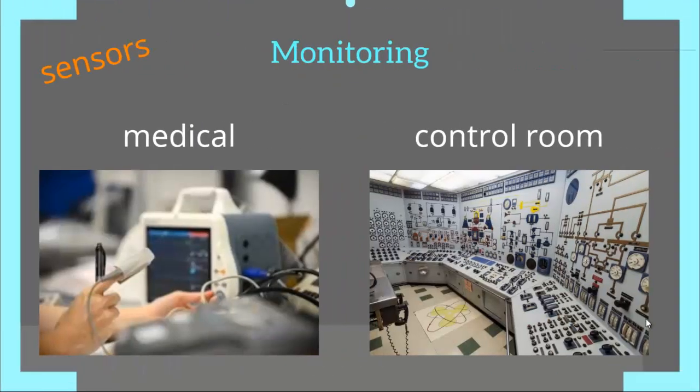Monitoring is based on sensors. Several sensors can be deployed and the data they gather can be monitored. Some examples would be in medical applications, where the heartbeat of a person may be monitored and anomalies may alert the doctor to take further action. Similarly, in an industrial environment, sensor data can be accumulated and displayed in the control room for further actions.